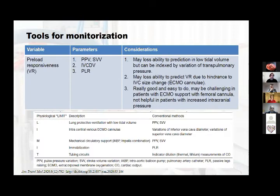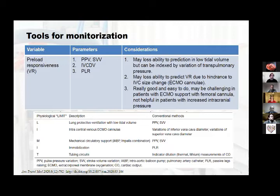For preload responsiveness, there are important changes in VA ECMO patients. During lung-protective ventilation — low tidal volume, low transpulmonary pressure — the low variations in pulmonary pressure may cause these parameters to lose their ability to predict volume responsiveness. So be careful when using pulse pressure variation or stroke volume variation for preload responsiveness in these patients.